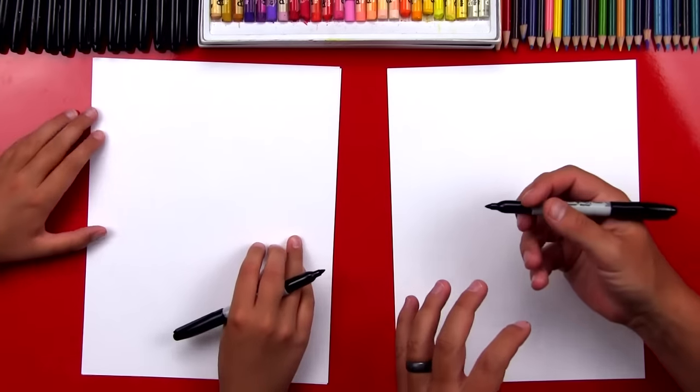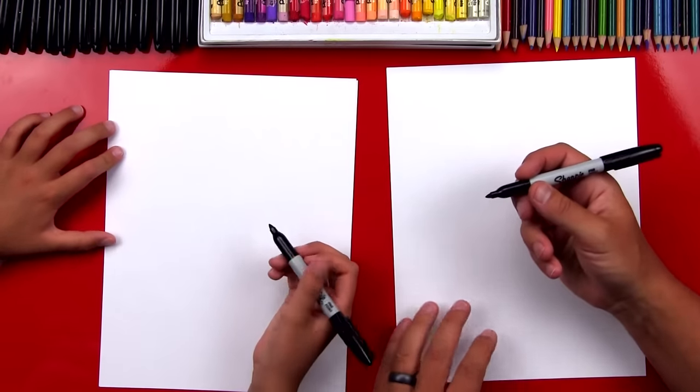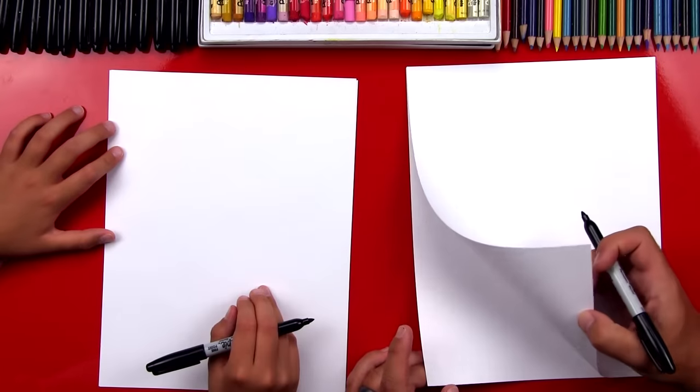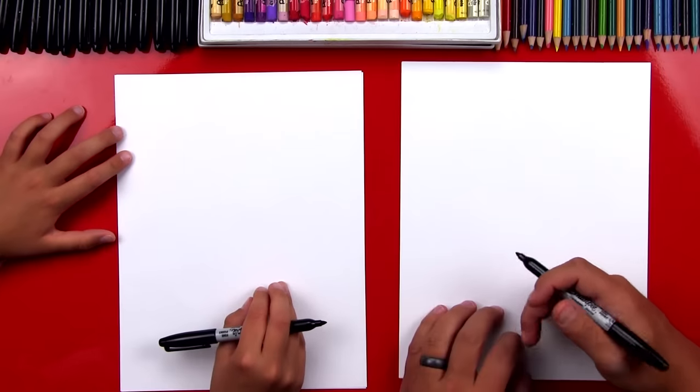Now we're using a marker but you can use whatever you feel comfortable drawing with. If you're using a marker or permanent marker, make sure you have at least two sheets of paper so your drawing doesn't soak through and get onto the table.